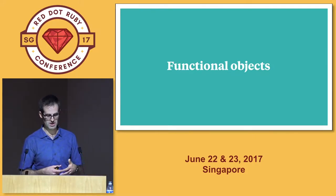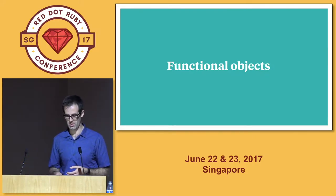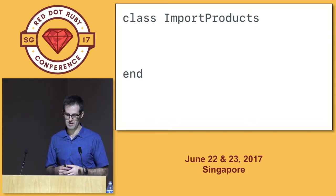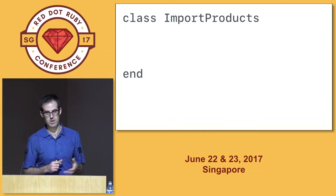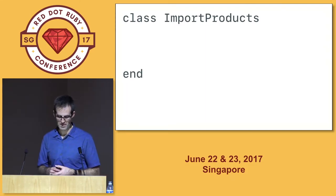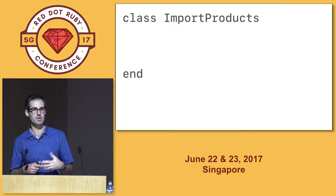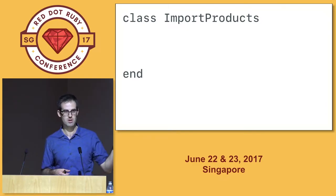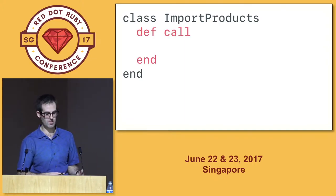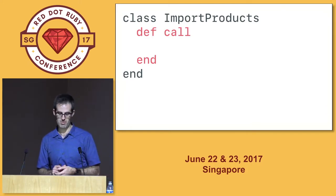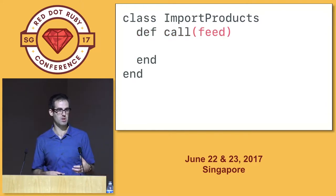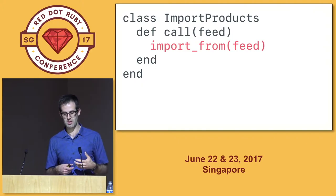This is where we get to the functional part of functional architecture. We can model these functions nicely in Ruby as functional objects. For our example today, we're making an import products class — say we're building an online store. We'd use something like this to populate our product database from a third-party feed. The first quality of a functional object: usually we can name them by a verb. It has a call method, just like Ruby's own language-level procs. That core method accepts an input, goes to work on it, and returns some output.